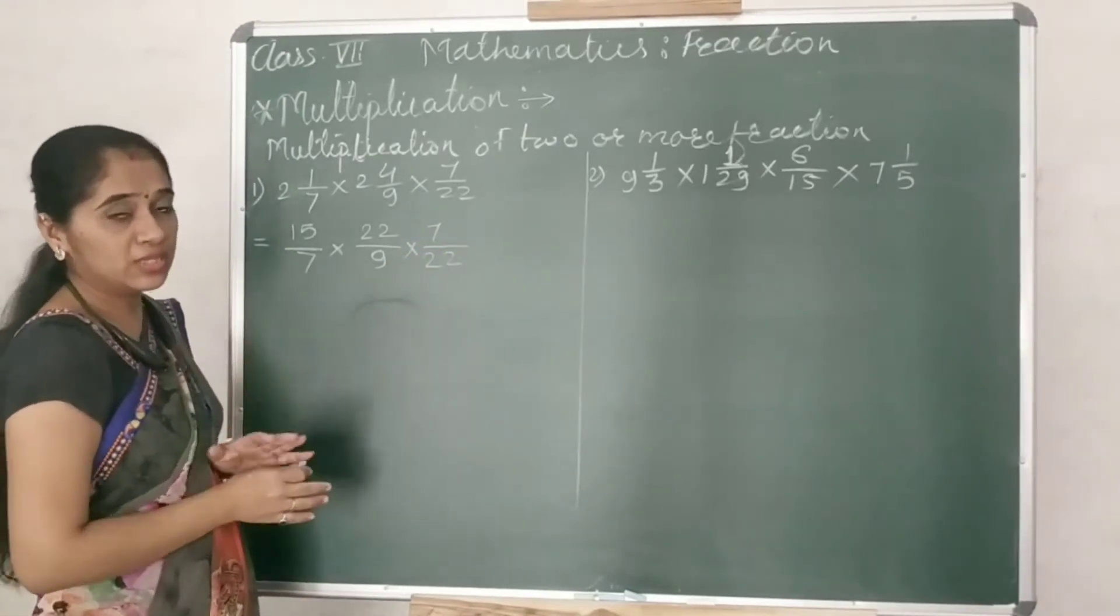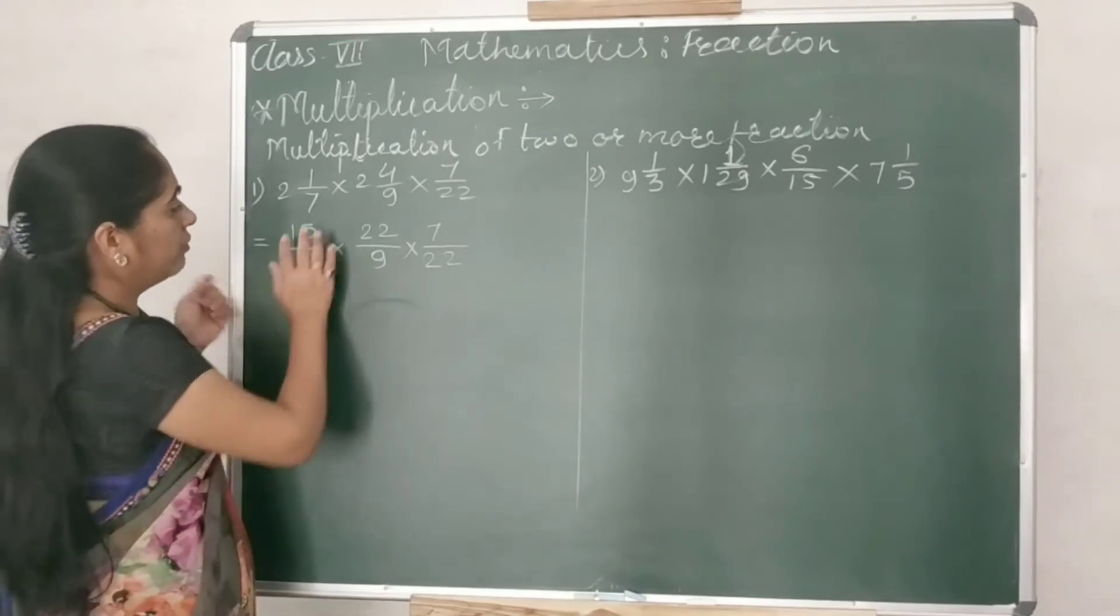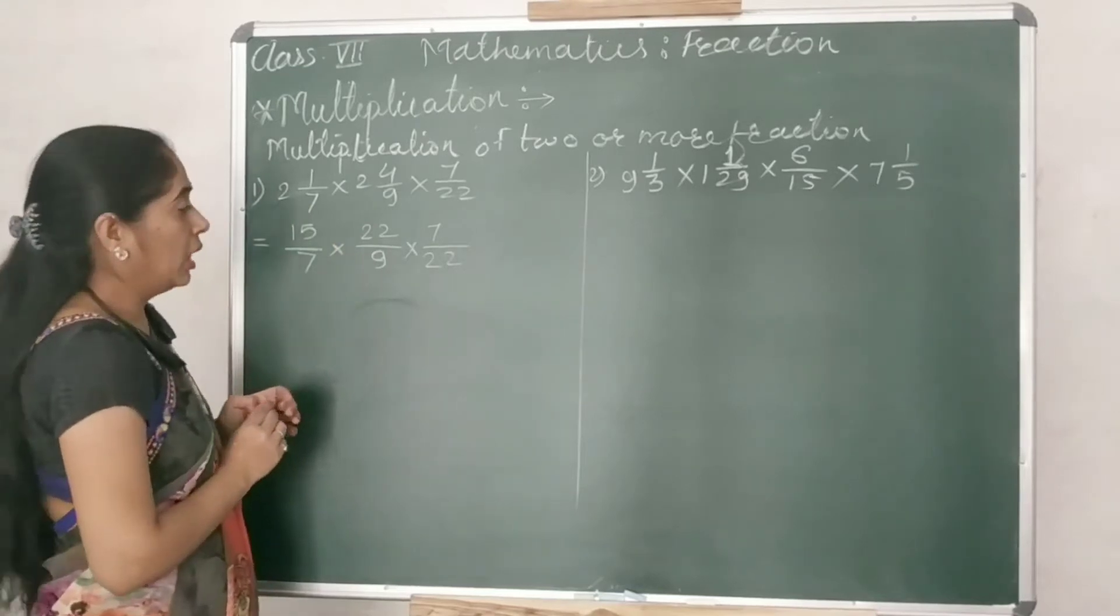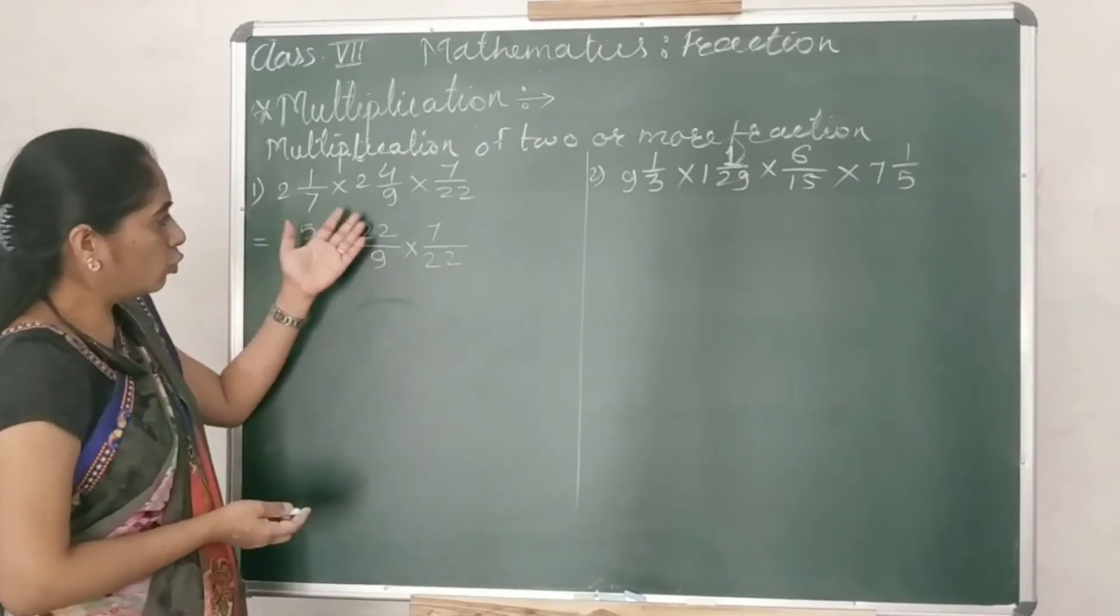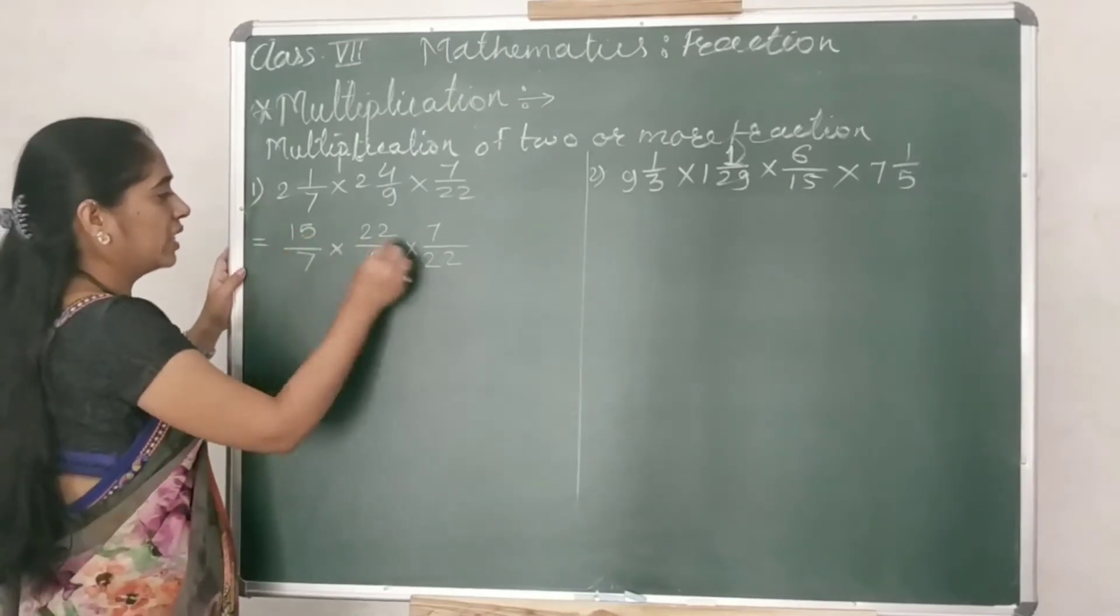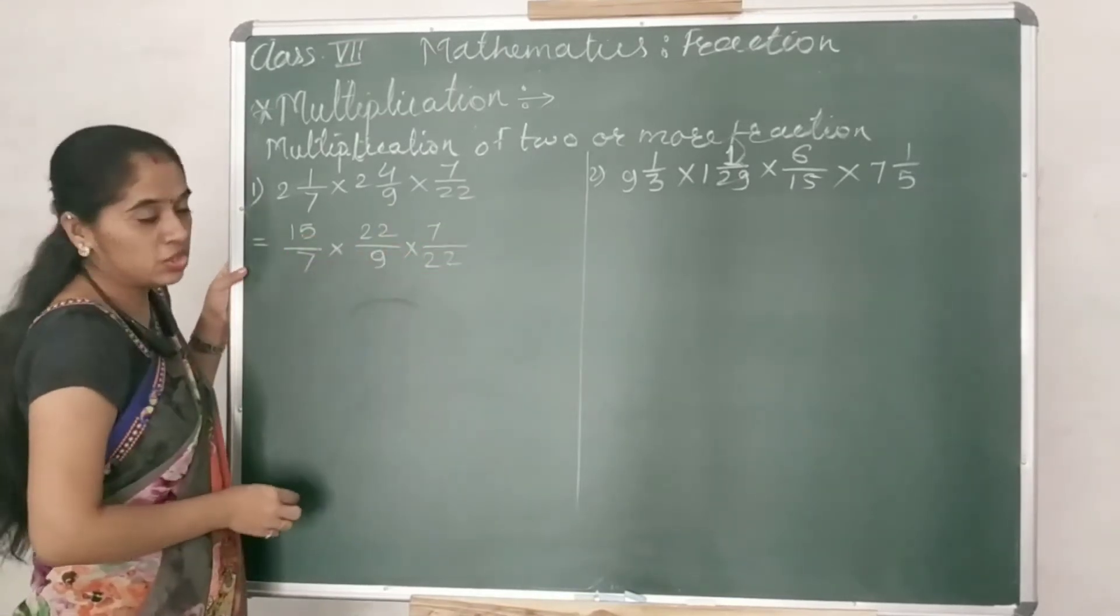Up to this time, what we have seen, we were having only 2 fractions, right? And we were simplifying with each other. But when you have more than 2, you see 3, 4 fractions with you, that time you can simplify with each other.